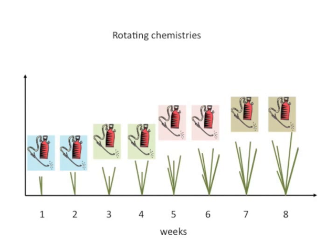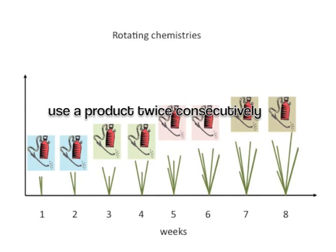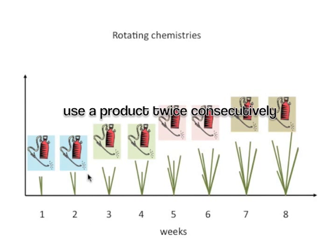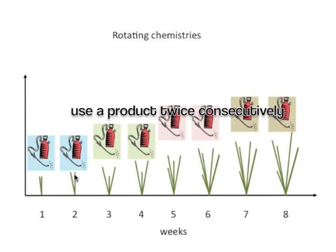In the illustration, an insecticide is applied twice consecutively during the growing season. It is best to use one product consecutively two times, and avoid spacing applications of the same product further apart during the season.